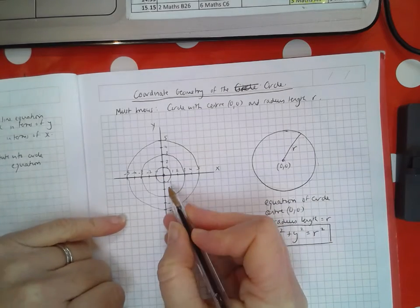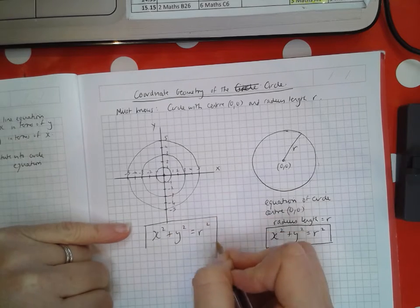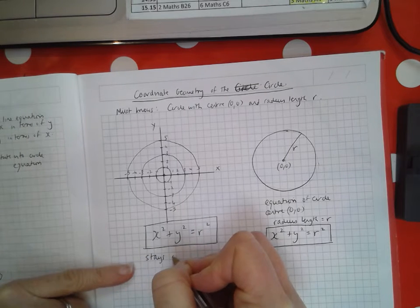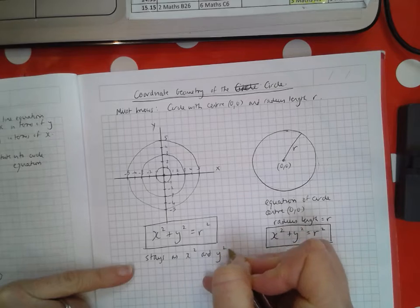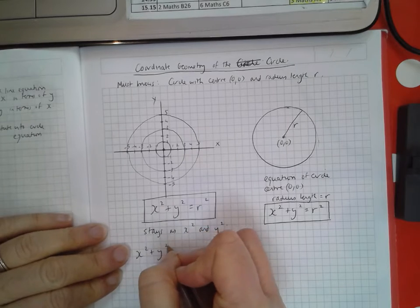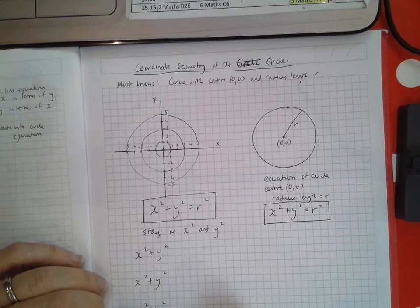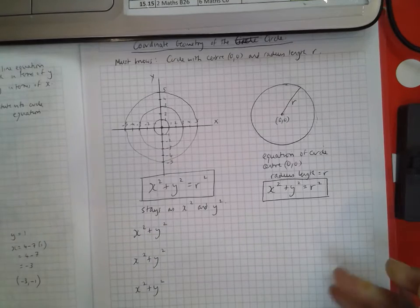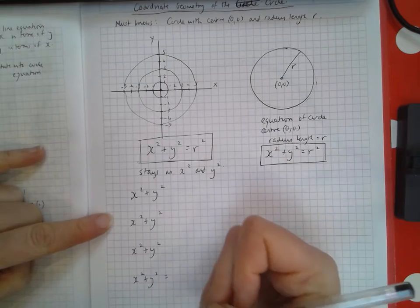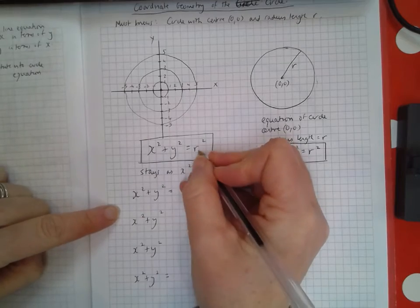The equations of those circles all follow the same shape: x² + y². That stays as x² + y² and doesn't change when we're making up the equation. Every circle with center (0,0) and radius r will have this format: x² + y² = r². Every circle with center (0,0) has x² + y², and then r²—r is the radius.